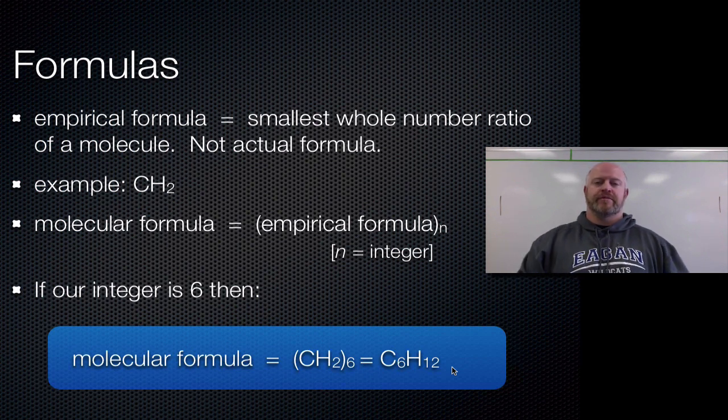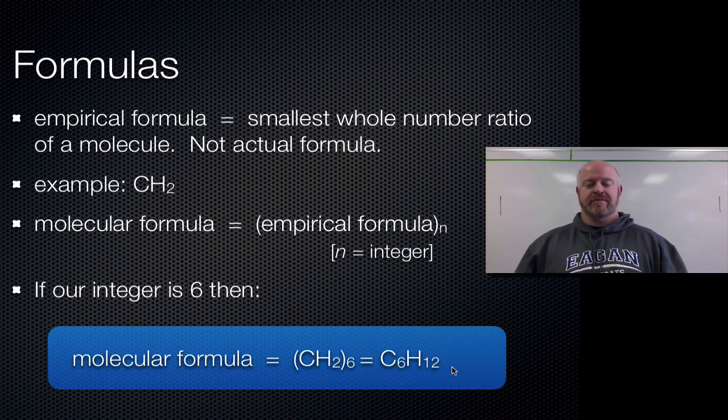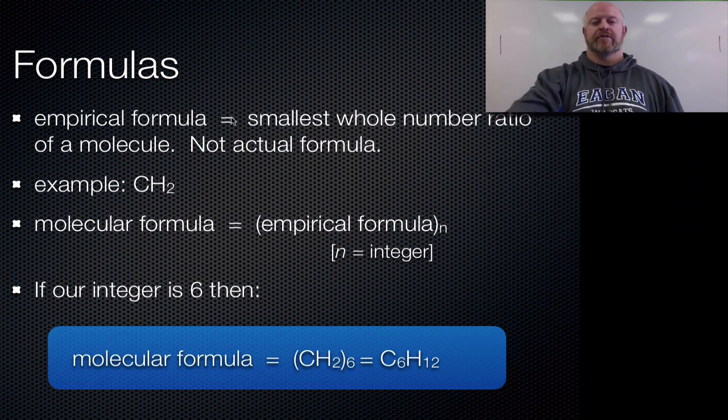We use this because a lot of times in chemistry, we can find the ratio between carbons and hydrogens within a lab process. But we may not be able to find the actual molar mass of that substance or the actual molecular formula. So sometimes in the world of chemistry, it's enough information just to know that ratio. So that ratio is known as the empirical formula.